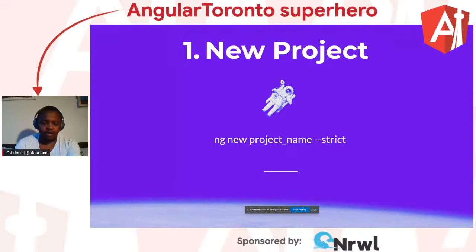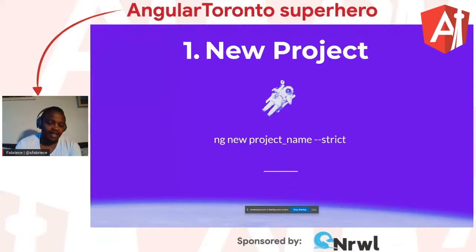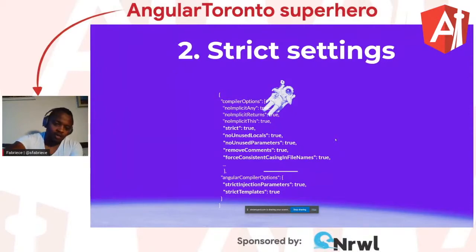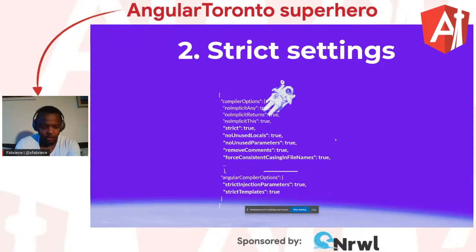Anyone who's created an Angular project before knows the `ng new` command. What's new is the `--strict` flag. This takes care of applying the strict TypeScript settings and Angular compiler settings. From a typical tsconfig file, I want all the highlighted properties set to true. Some of them are standard like `strict: true`, but `noUnusedLocals` and `noUnusedParameters` are some things I want on top of what's provided by the `--strict` flag.